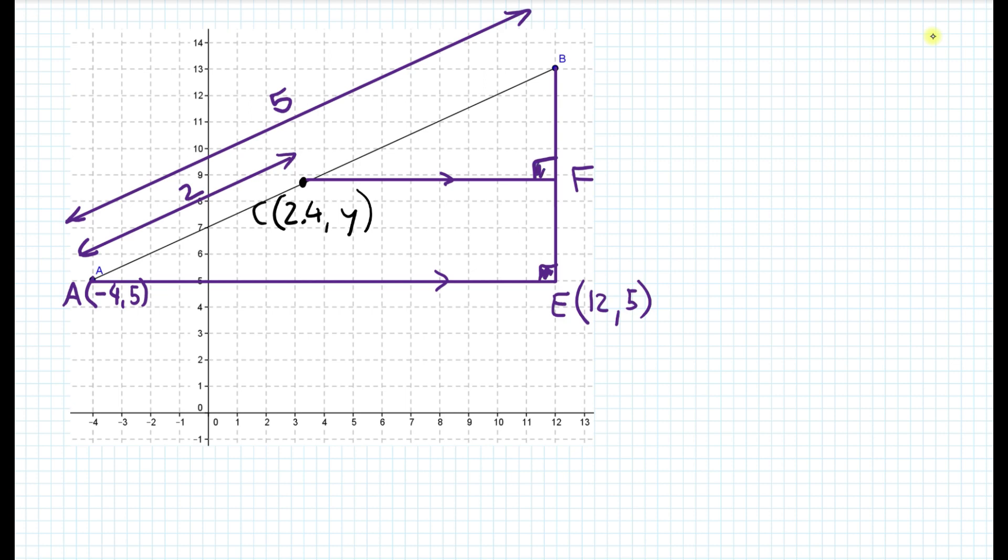So by doing that, we're ensuring that we have similar triangles again. So we know that these two right angles are congruent, and we know that this angle is congruent to itself. So again, now we have triangle ABE is similar to triangle CBF. Since they're similar because of the AA similarity postulate, we can now set up a proportion.